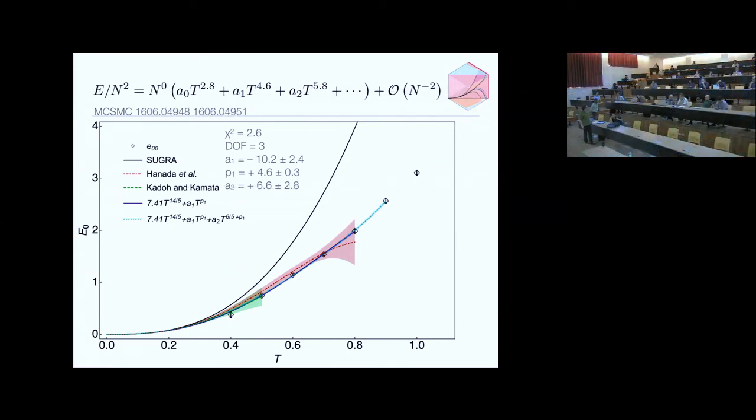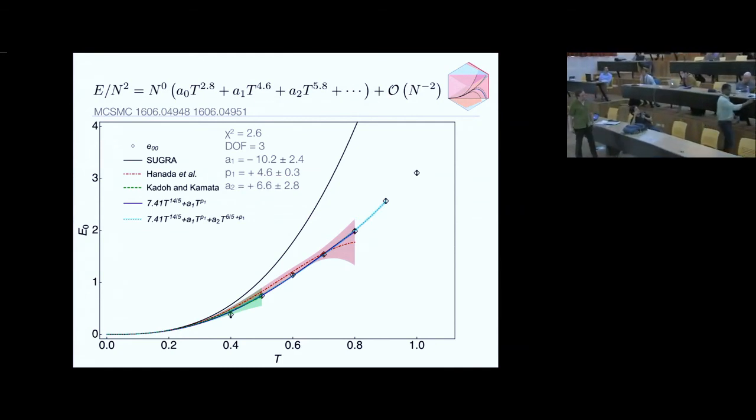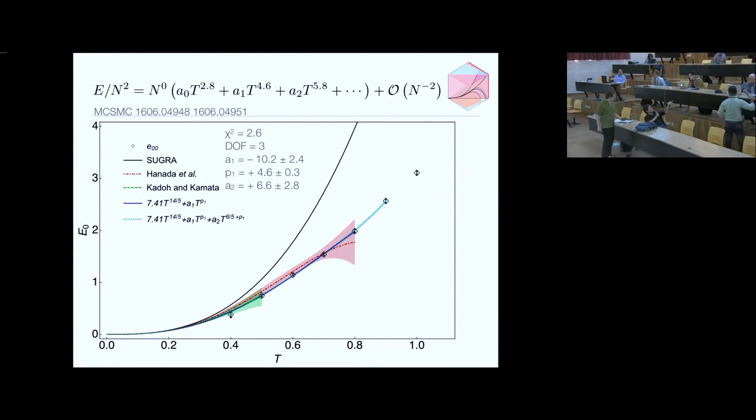Maybe in D1 or D2 brane case, power corresponding to alpha prime is bigger. Then it would be easier to separate such effect.